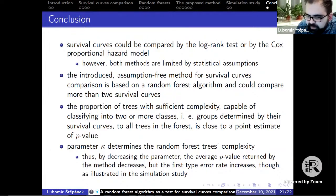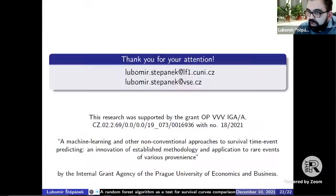We derived the proportion of trees with sufficient complexity capable of classifying into two or more groups determined by the survival curves. It's close to a point estimate of p-value. The parameter κ determines the random forest tree's complexity, and by increasing the parameter the average p-value returned by the method increases, but the first type error rate decreases as illustrated by the simulation study. As an advantage compared to the log-rank test or Cox model, the random forest method is assumption-free and it could compare more than two survival curves. Finally, the method is implemented in a newly prepared R package. Thank you for your attention. If you have any questions, I can try to answer them. Thank you.